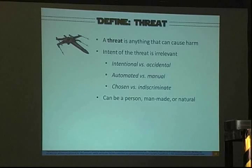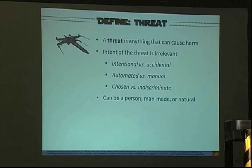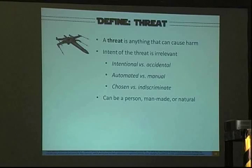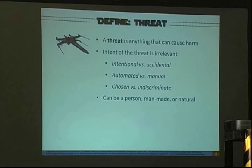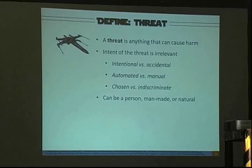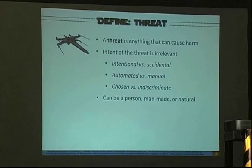Threats: this is what is causing you harm. It can be a person, man-made, or natural — a natural disaster is a threat. Maybe not something we always think about with information systems, but HVAC, fire suppression, and similar controls are countermeasures to natural disasters. It really doesn't matter what the intent of that threat is — it could be an insider threat intentionally trying to hurt you, doing it manually, or automated like somebody doing ping sweeps. Whether it's chosen and discriminate or not, it's all a threat.